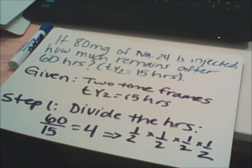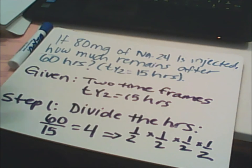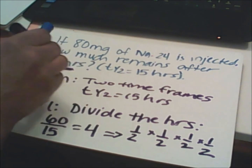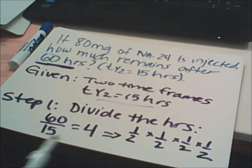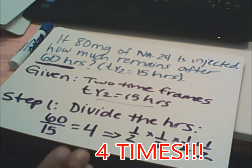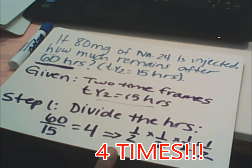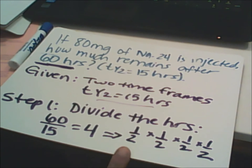This problem is similar to the Tylenol problem — I'm giving you 80 milligrams of a supplement and I want to know how much will be in your body after 60 hours. You're given two time frames: 60 hours and the half-life factor of 15 hours. Divide the total time by the half-life: 60 divided by 15 gives you 4. That four represents one-half times one-half times one-half times one-half — four times.